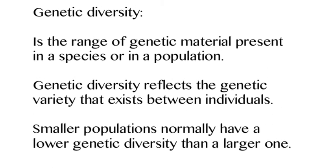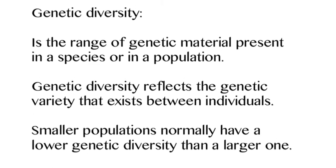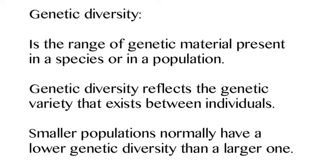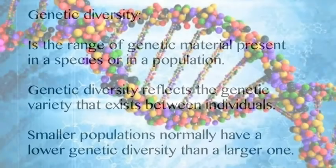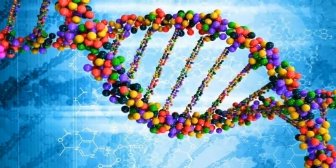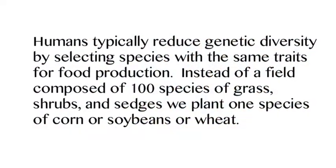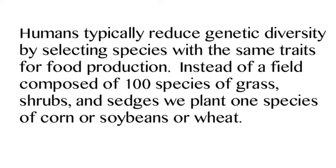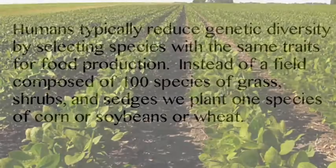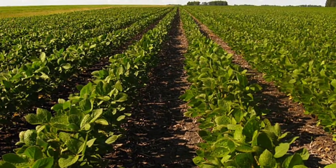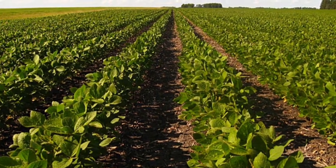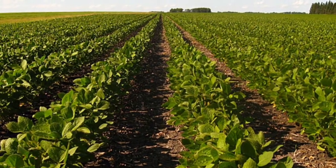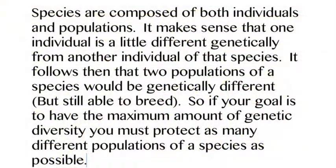Let's start with genetic diversity — that's the variation of DNA within a population. Sometimes we also look at individuals, but it's more often at the population level. Humans typically reduce genetic diversity by selecting for certain crops. We take an area like a prairie that might have a hundred plants and instead put in soybeans, which have very similar genetics, especially if they're genetically modified.